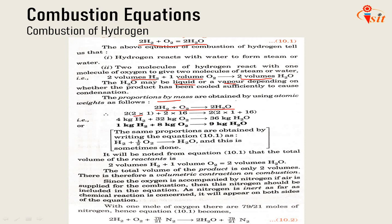Simplifying: when 1 kg of hydrogen reacts with 8 kg of oxygen, we get 9 kg of water. Also written as H2 + ½O2 → H2O. If we take 1 volume of H2, we need to react with ½ O2 to get H2O. So the total volume of the product is only 2 volumes; therefore there is a volumetric contraction on combustion. Since oxygen is accompanied by nitrogen when air is supplied, nitrogen should be included in the equation. As nitrogen is inert as far as the chemical reaction is concerned, it will appear on both sides.